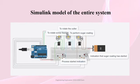Simulink model of the entire system. The 3 DC motors are used for the following functions: one is to rotate the screw feeder, one is to rotate the cutter, and the other one is to perform sugar coating. The 2 LEDs are used to indicate that the process has started and that the sugar coating has started.